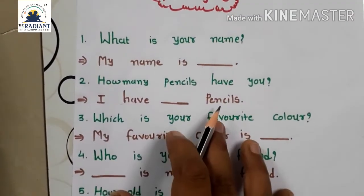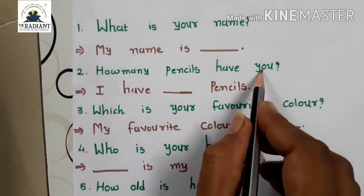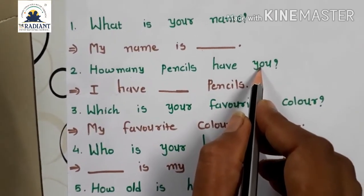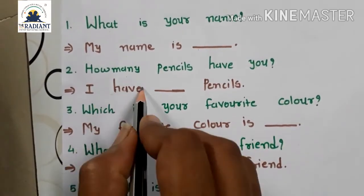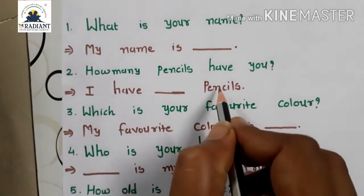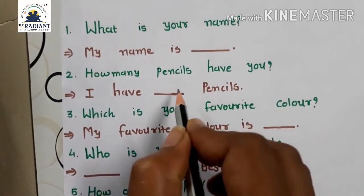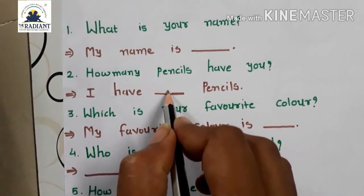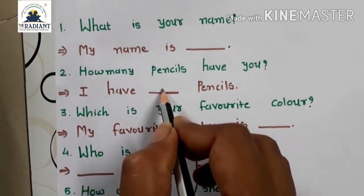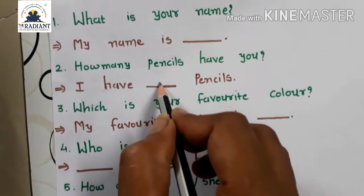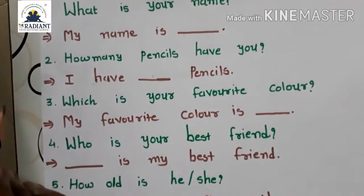Next question: how many pencils have you? Tamaari paase kitali pencil chhe? I have, kharae jageyamaa, pencils. 3, 4, 5 — tamaari paase chhe, itali pencils tamarun yaa lakwaanun rèche. Numbers mahi, numbers mahi, then next.